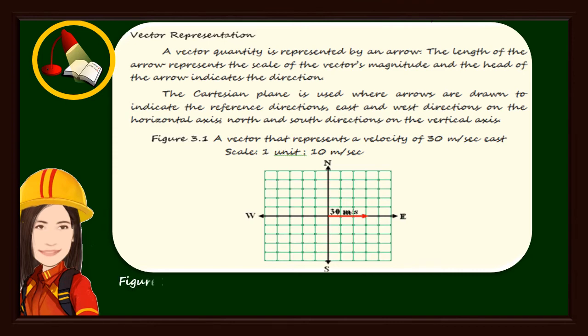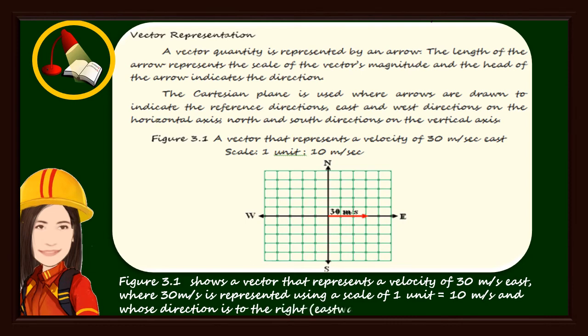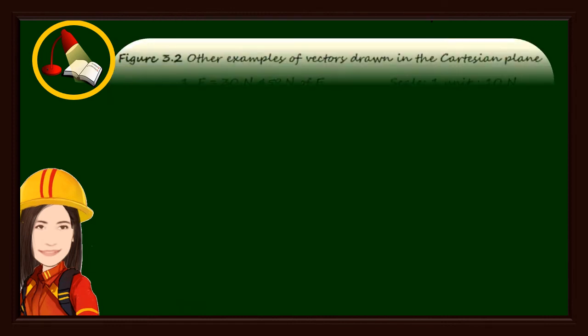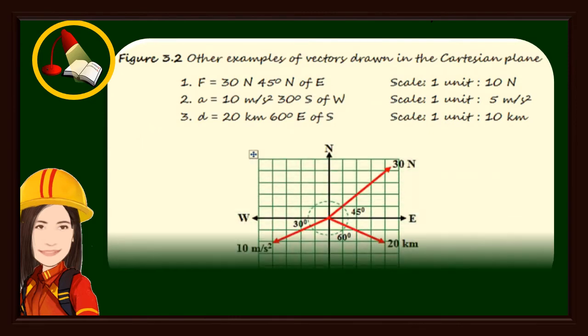Figure 3.1 shows a vector that represents a velocity of 30 meters per second east, where 30 meters per second is represented using a scale of 1 unit equals 10 meters per second, and whose direction is to the right — eastward. Figure 3.2 shows other examples of vectors drawn in the Cartesian plane.